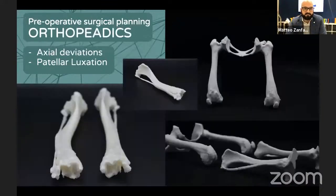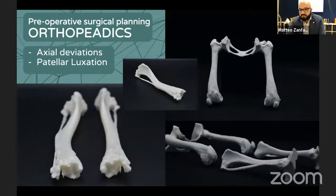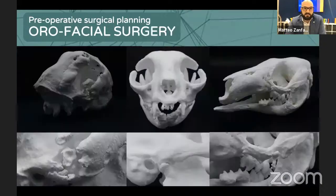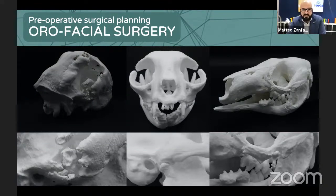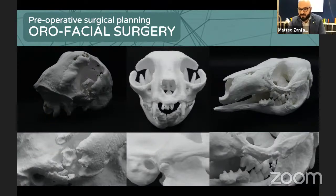For preoperative surgical planning, mainly it was orthopedics — usually axial deviations of any kind. The most common pathology I had the opportunity to work on was patellar luxation, specifically fourth-grade patellar luxation. The other main group was oropharyngeal surgery. I made models for dogs and cats, and on the right you can see a red panda — it was for the University of Milan, and it was very strange to print.